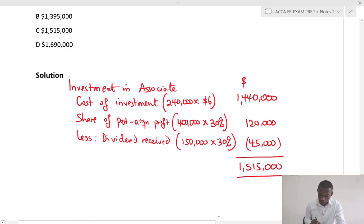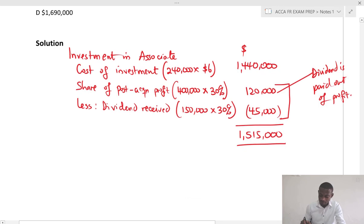Please note here that the reason we have deducted the dividend from this is that the dividend is paid out of profit. And because dividend is paid out of profit, you have to deduct the amount of dividend received from the total profit received.